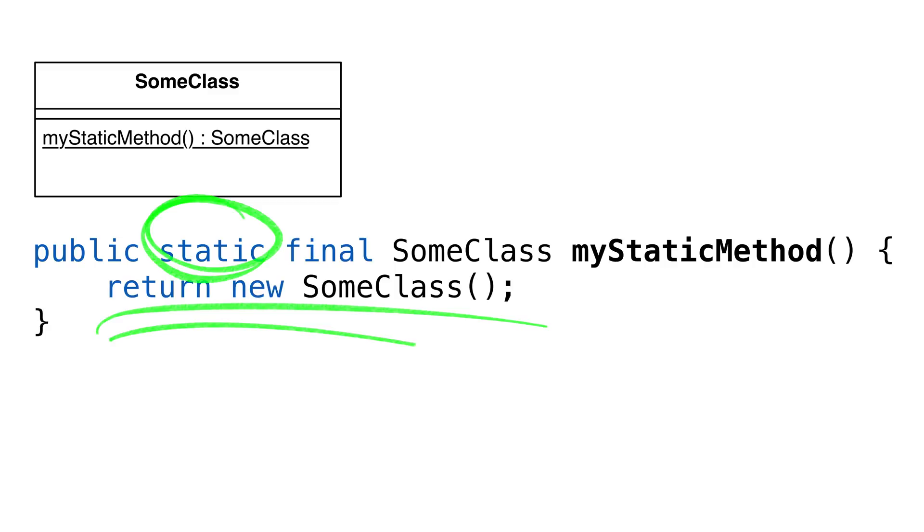It might call a constructor to create an instance, or it might return an instance it's already created. So our next thought is, how does that help us?